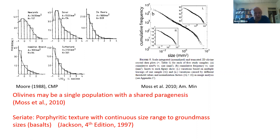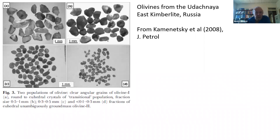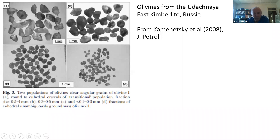What this means is that kimberlites could be said to have a seriate texture — a wide range in size down to the groundmass. This is nicely illustrated in an image from work by Dima Kamenetsky and co-workers, where large olivines are rounded or angular, and at small sizes many of them are euhedral, if the kimberlite is fresh enough.